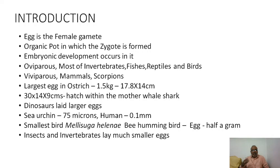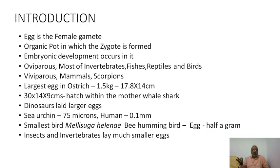Based on eggs, animals are broadly categorized into two types. Oviparous animals lay fertilized eggs outside the body — most invertebrates, most fishes, reptiles, and all birds are oviparous. Reptiles lay large cleidoic eggs covered with shells, and all birds also lay eggs outside.